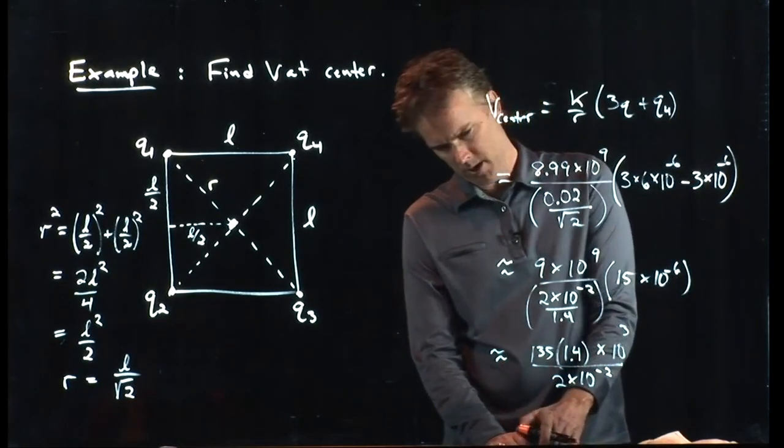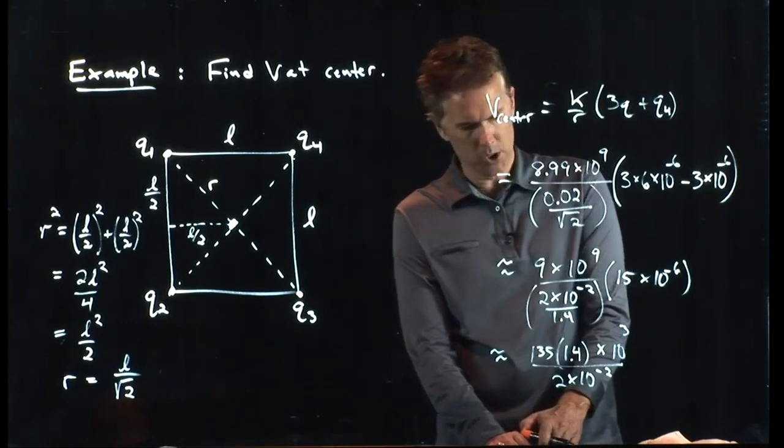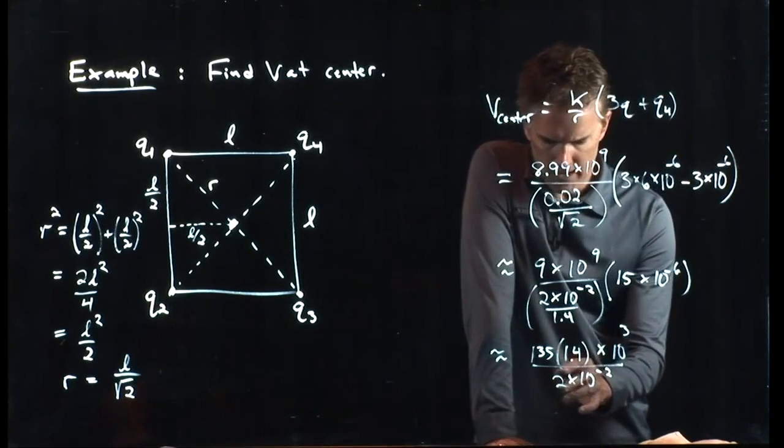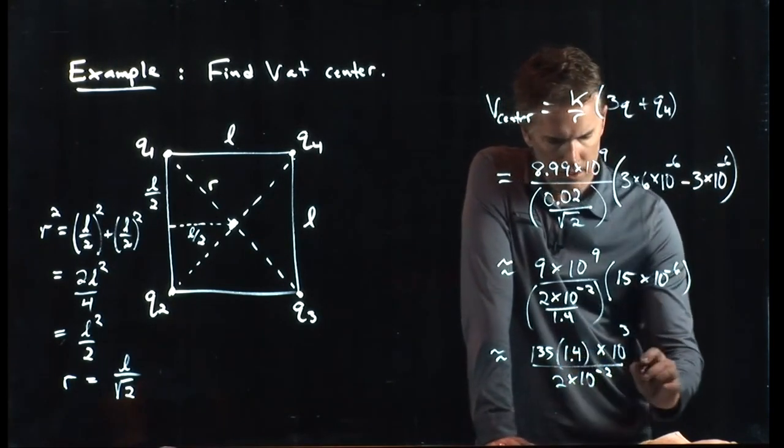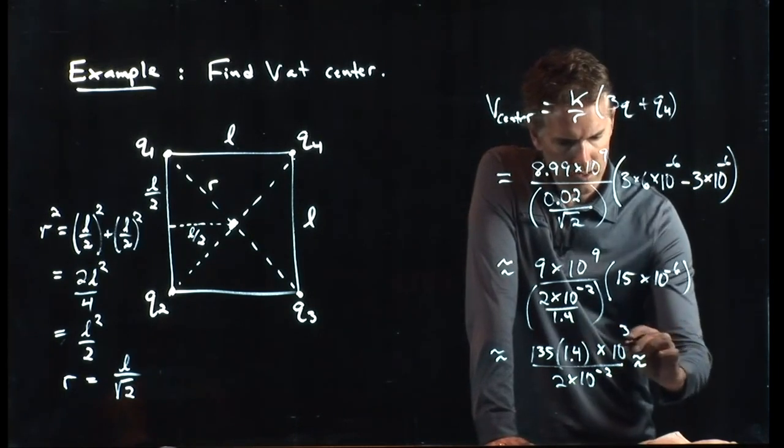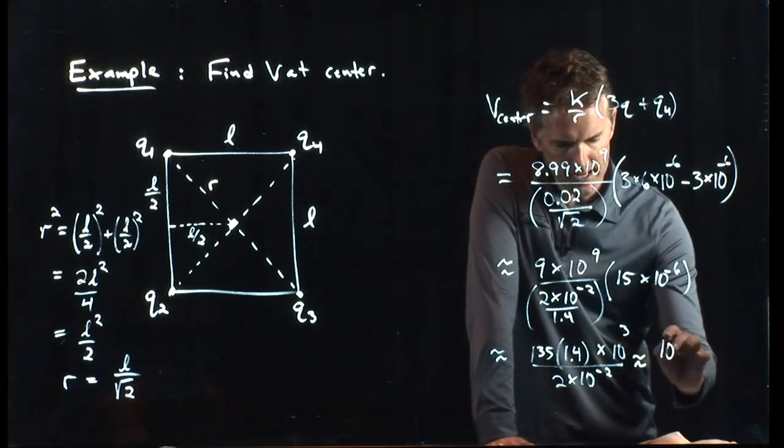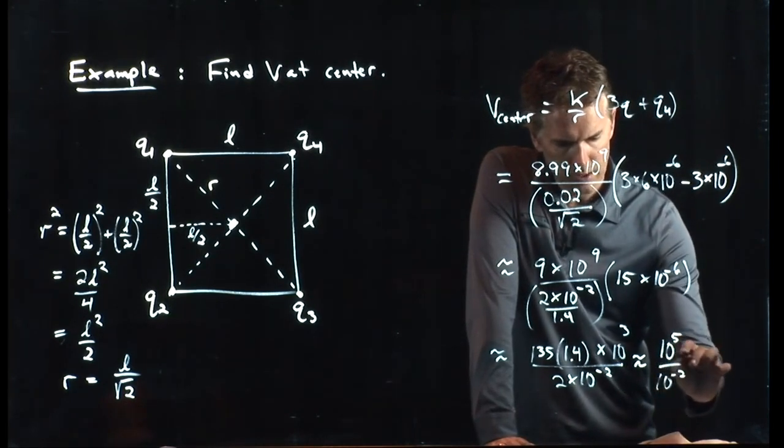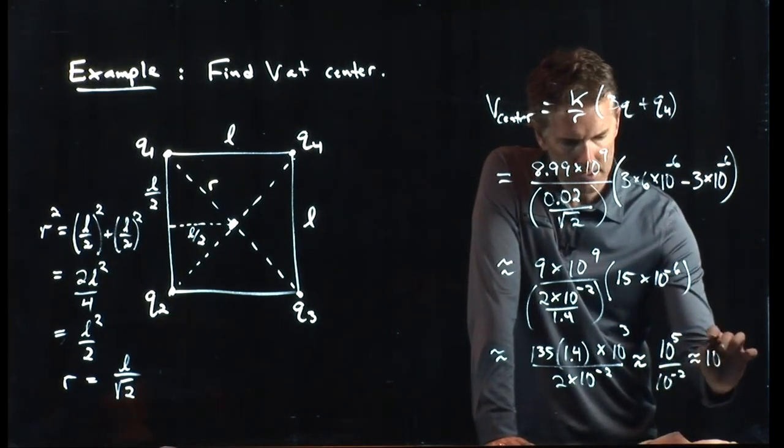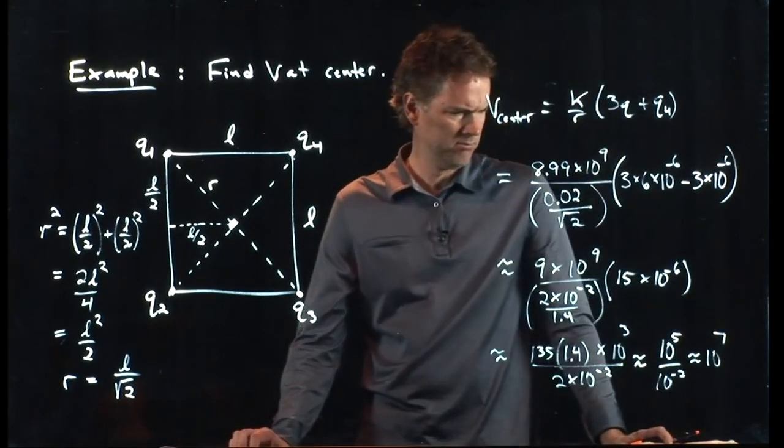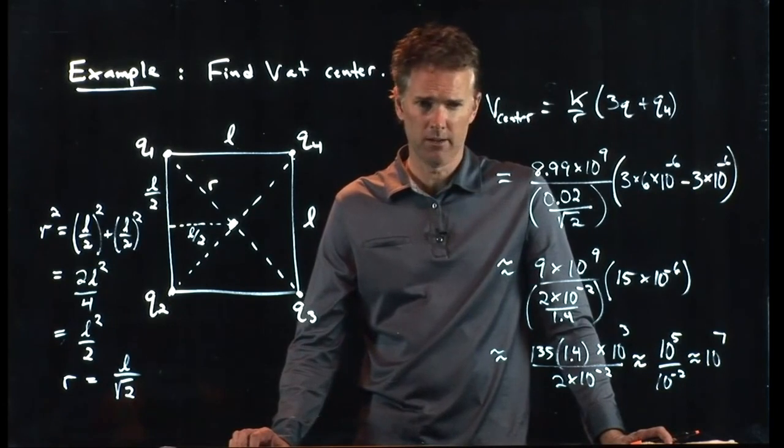So I have 100 there, I have 3 there, so that's a 10 to the 5, and then I have a 10 to the minus 2. So I'm going to say this has got to be around 10 to the 7. Did anybody run in their calculator and get a number?